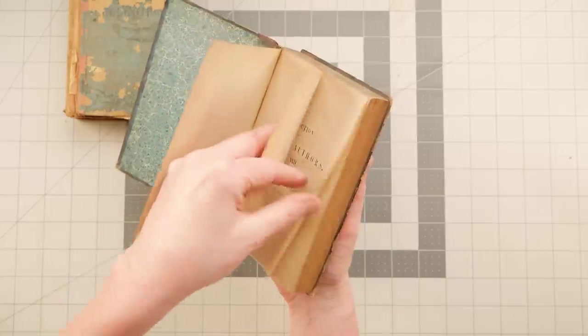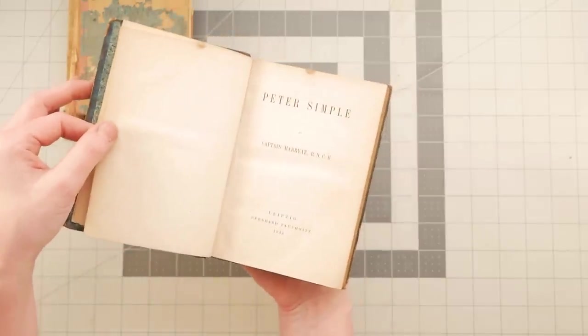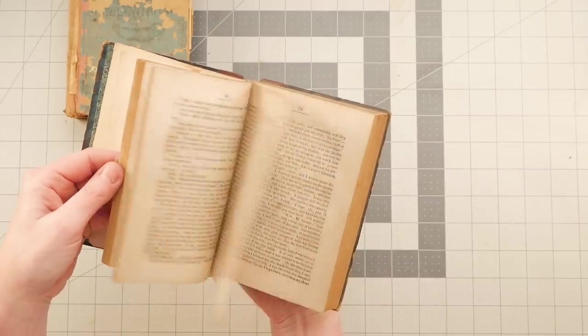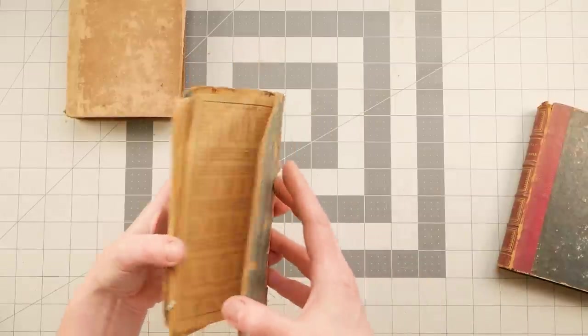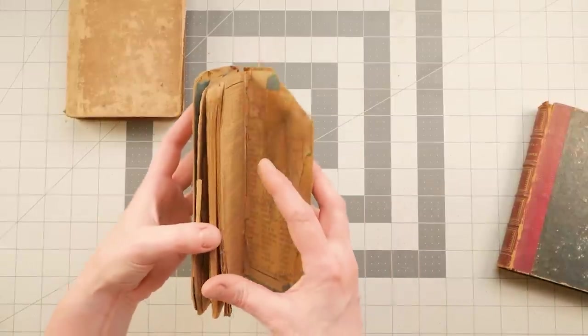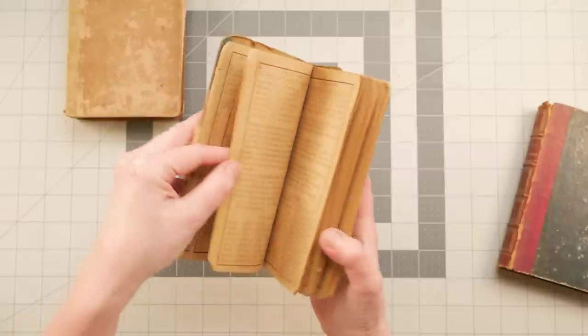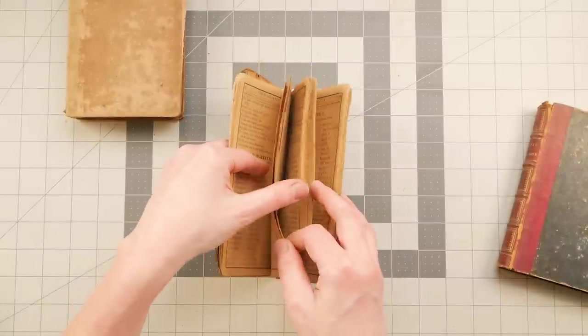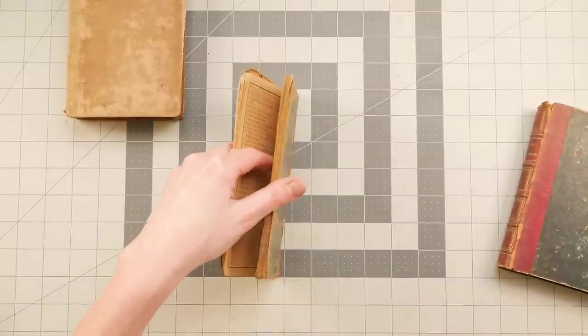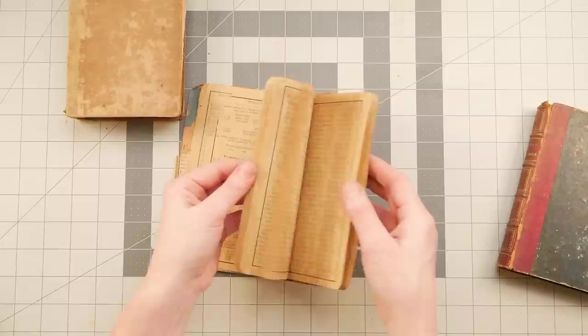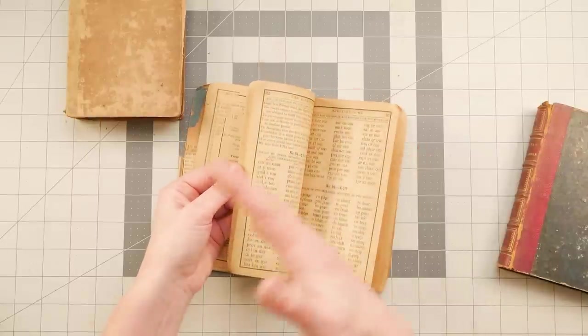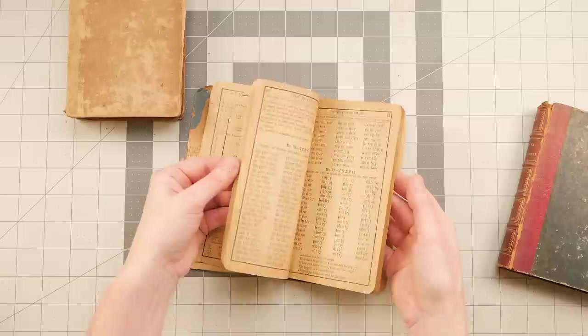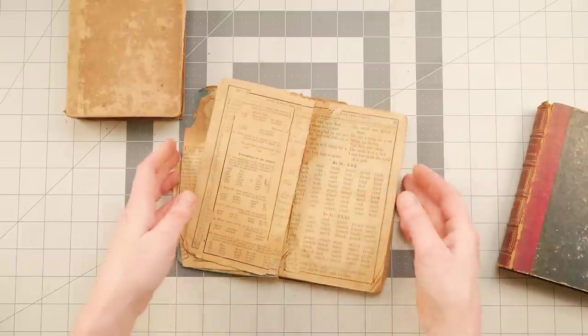This one, 1842. Peter Simple. I'm going to assume it's a novel of some kind. And this is a spelling book. I couldn't find a date in this one, but it is pretty much falling apart. Sometimes the paper that was used was more acidic than other papers in other books. And that's why you'll see a huge discrepancy in deterioration from one book to another, just from the quality of paper that was used to print on.